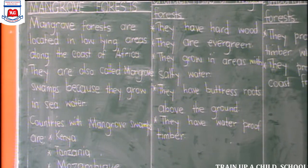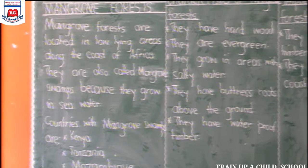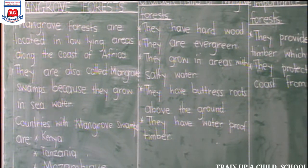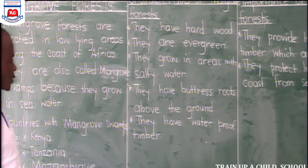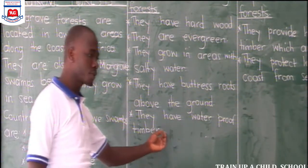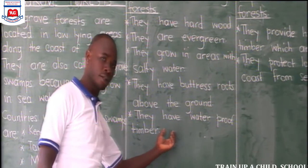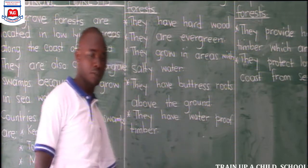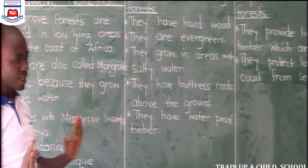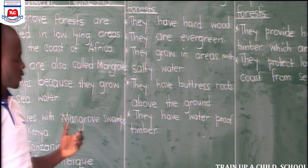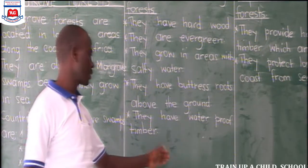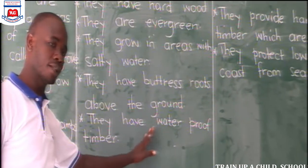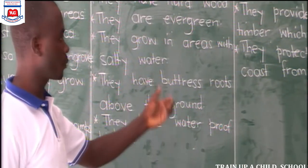How do mangrove forests support the fishing industry? The answer is that mangrove forests provide waterproof timber for making ships. That is the correct answer: mangrove forests provide timber for making ships.